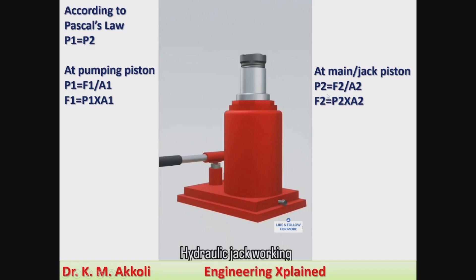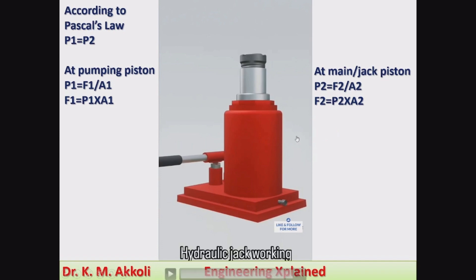At the main piston or jack piston, pressure P2 equals F2 divided by A2. Since the area A2 of the main piston is larger, we can write F2 equal to P2 times A2. Because the area is larger, the force will be greater. Therefore, amplification of force takes place according to Pascal's law, and the lifting of the load occurs.